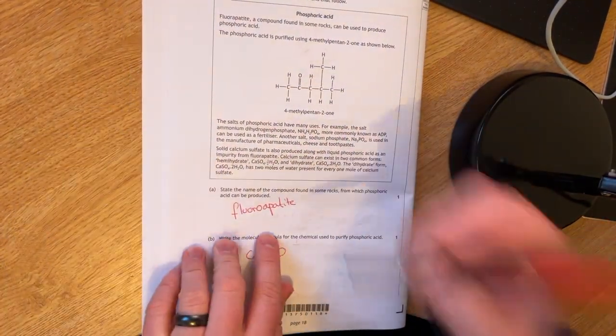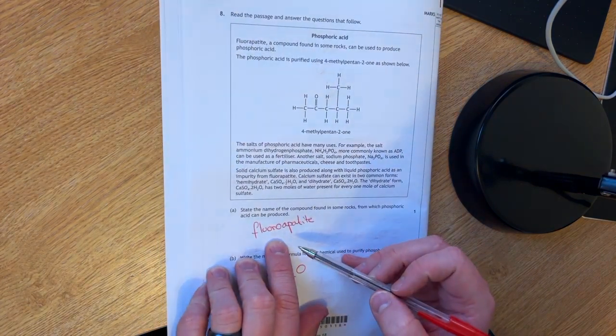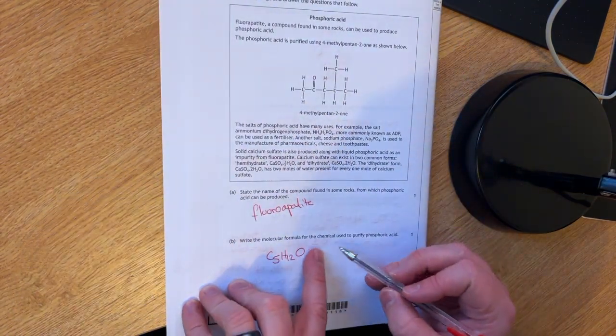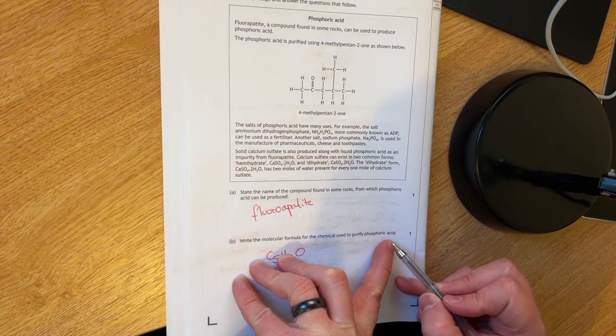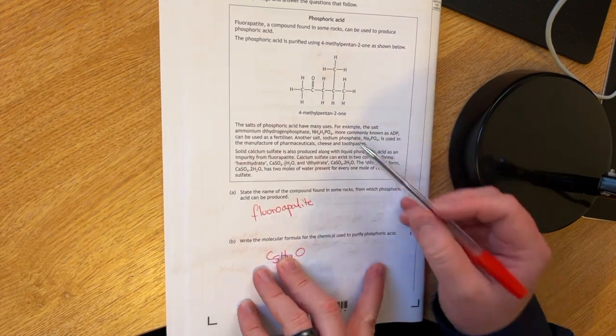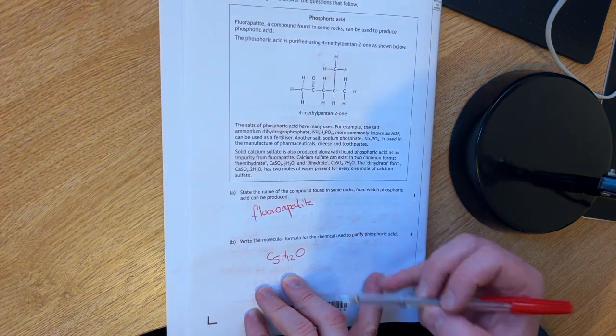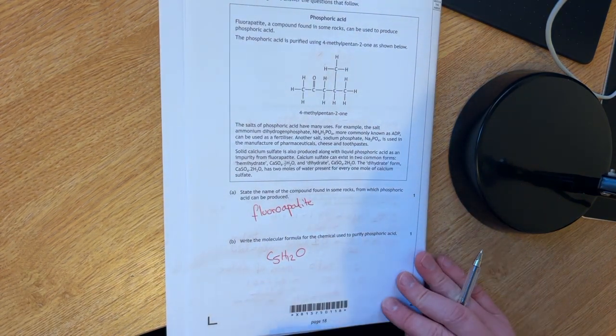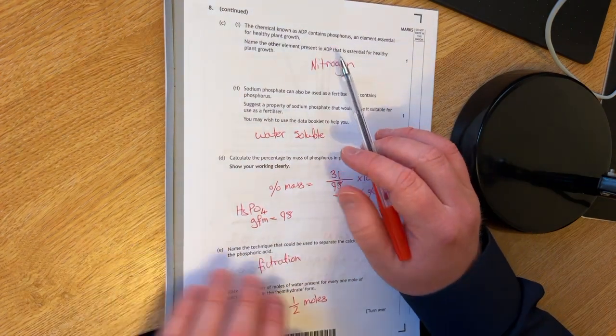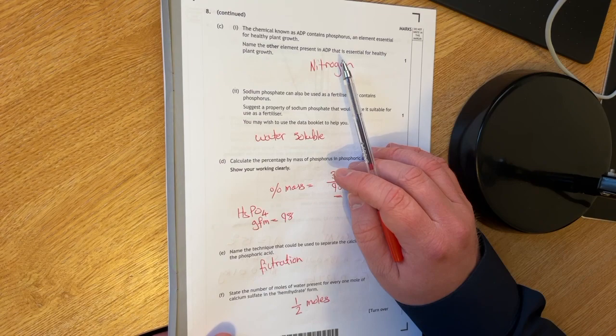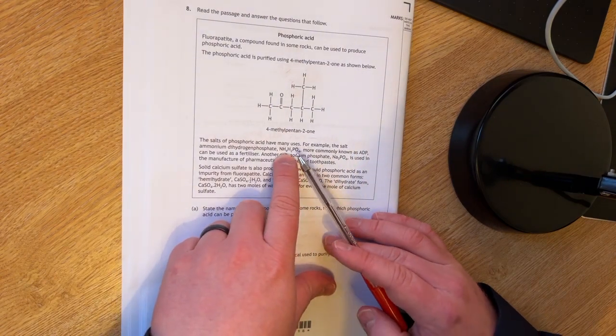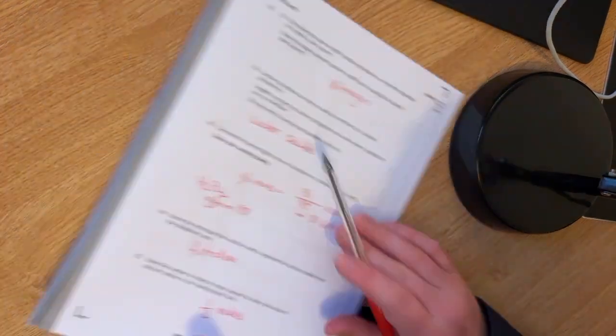Question eight. You have to read the passage. If you read the passage, the answer was fluoroapatite. You have to write the molecular formula for the chemical used to purify phosphoric acid. This is the chemical here. You were just to count up the number of carbons and whatnot. So C5H12O is what we went for there. You're reading the passage and the answer was nitrogen for every other element. And it was found in ADP.